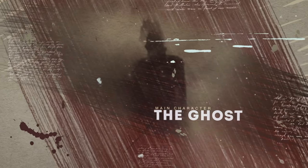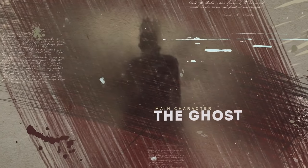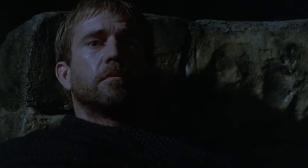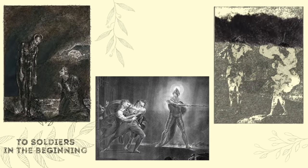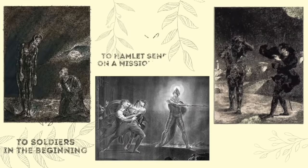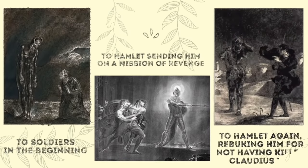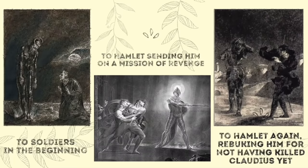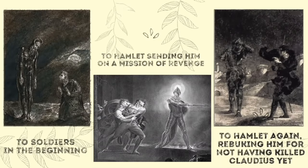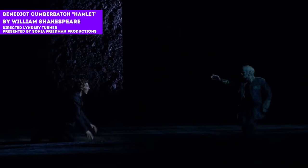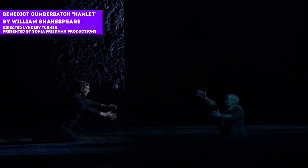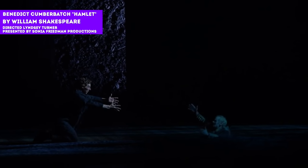The ghost of Hamlet's father is often referred to as King Hamlet to distinguish him from his son. The ghost appears three times throughout the play: first to soldiers in the beginning, then to Hamlet, sending him on a mission for revenge, and lastly to Hamlet again, rebuking him for not having killed Claudius faster — "Hamlet, remember me!"